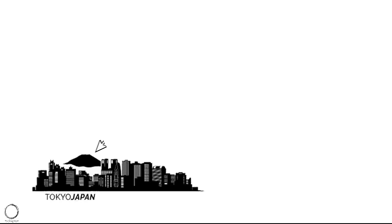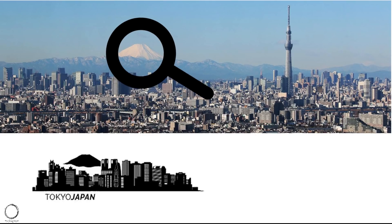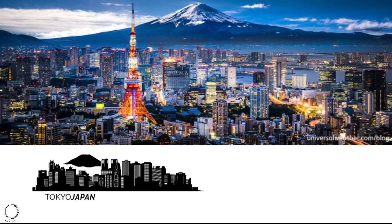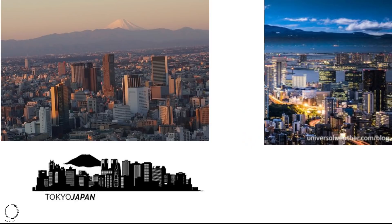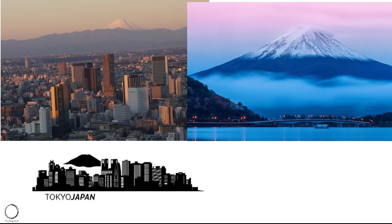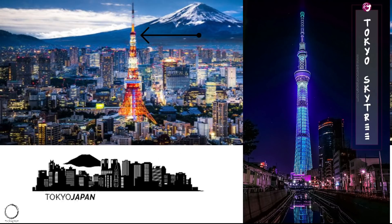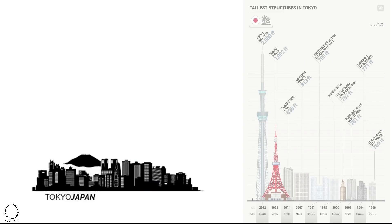Moving on to Tokyo, Japan. The skyline of Tokyo is dominated not by any building or tower but by Mount Fuji, the highest mountain in Japan, visible on clear days. Mount Fuji's exceptionally symmetrical cone, covered in snow for about five months, is a cultural icon of Japan and is more than enough to identify Tokyo's skyline. Another prominent structure is Tokyo Tower and Tokyo Skytree, the tallest towers of Tokyo, though not visible in the skyline shown.